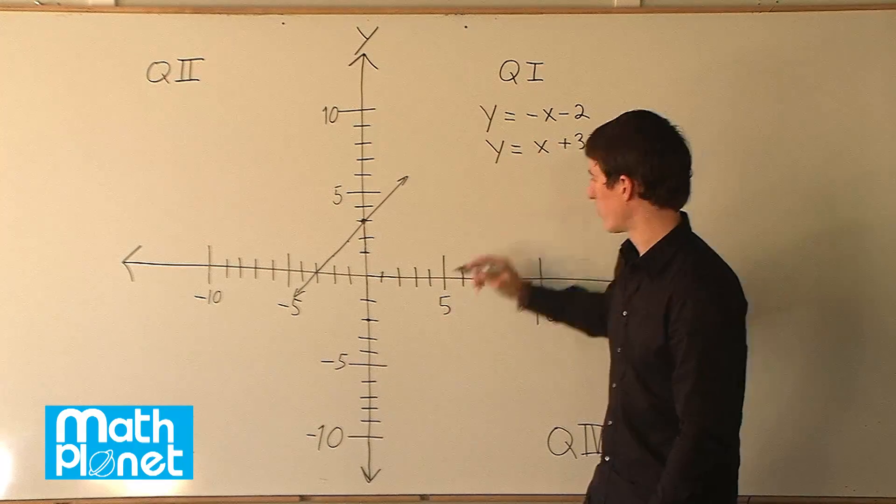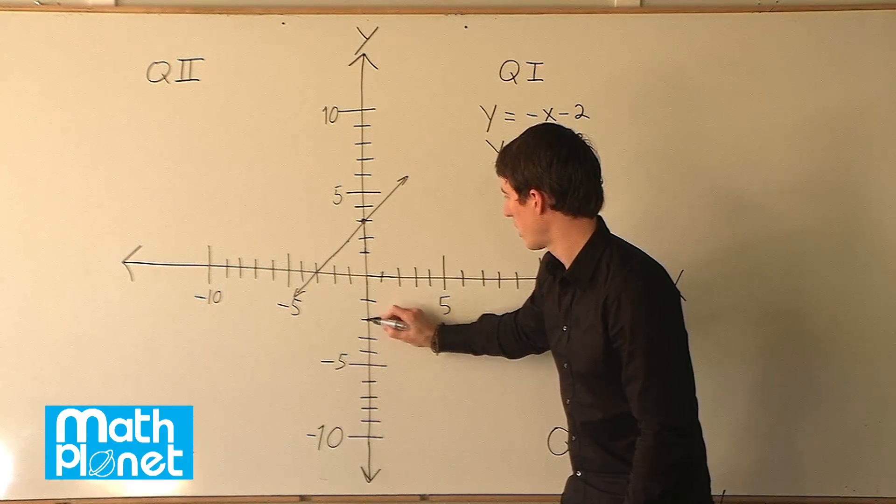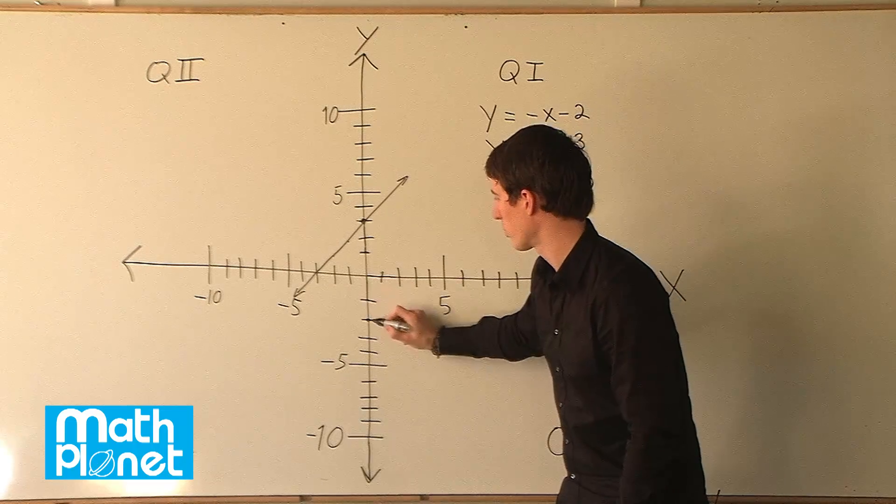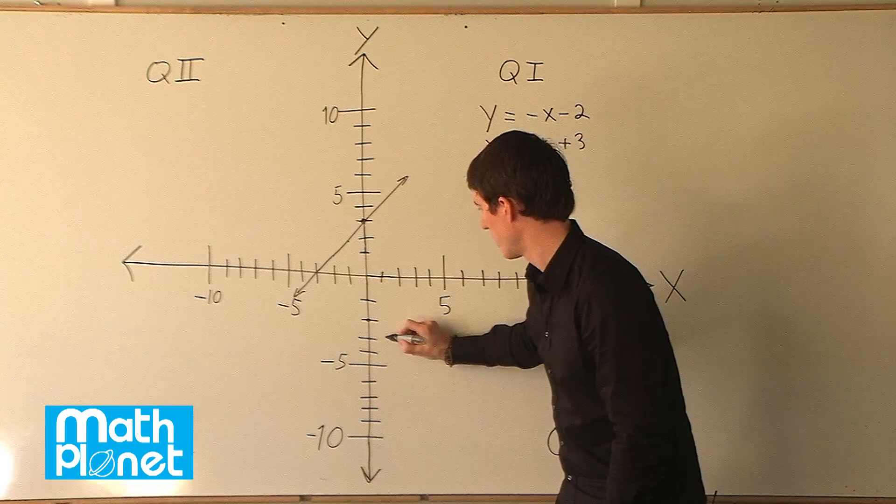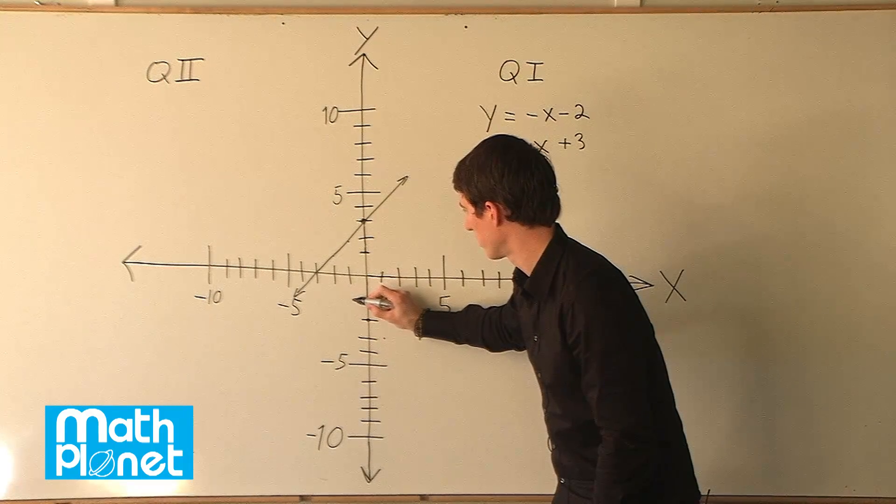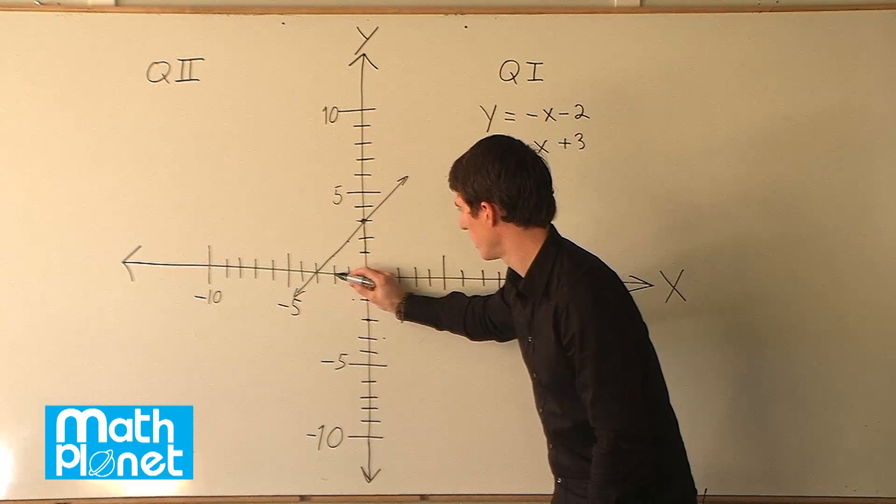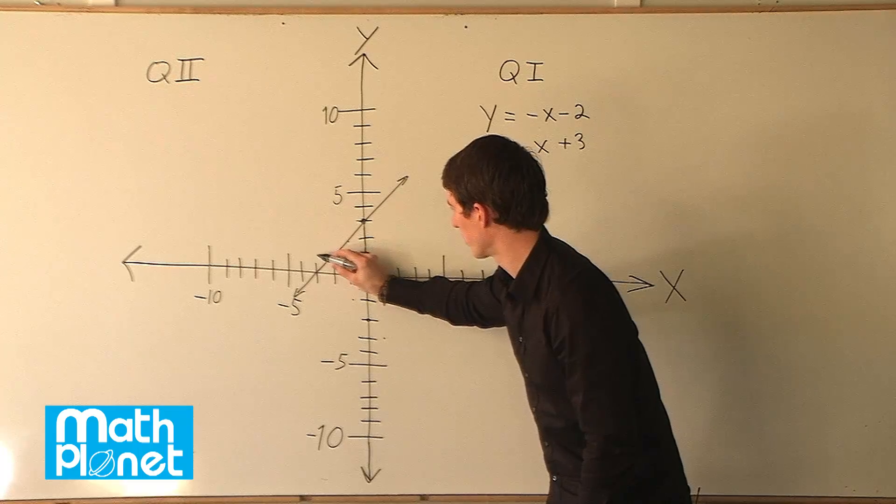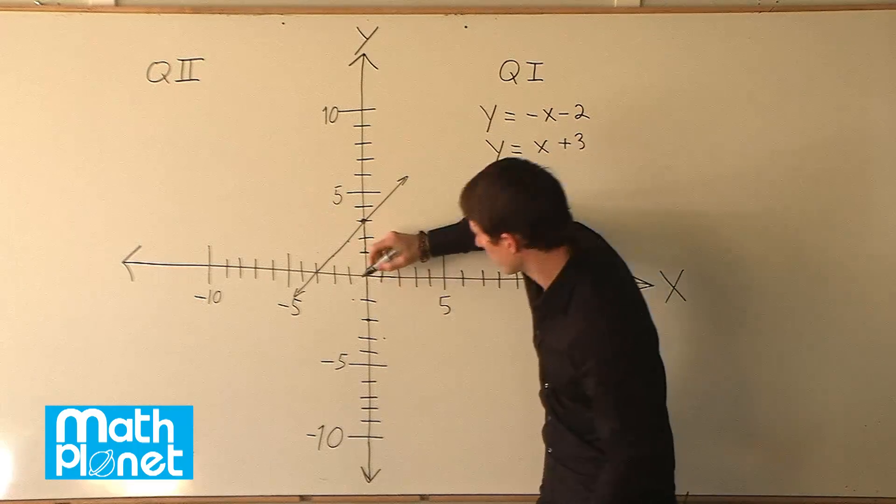The slope is negative one. So we go up one and to the left one or down one and to the right one, however you want to do it. So we'll have a point here. Up one, left one. Here. Up one, left one. Here. And one more. Up one, left one. Great. So now we have enough points that we can see where they cross.